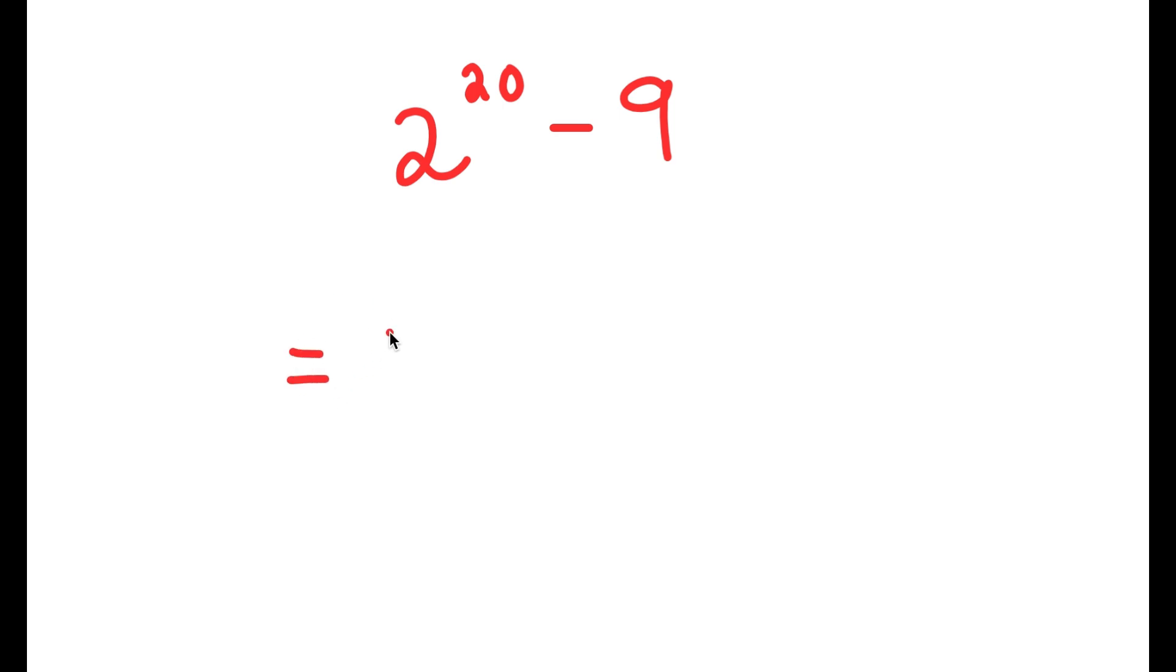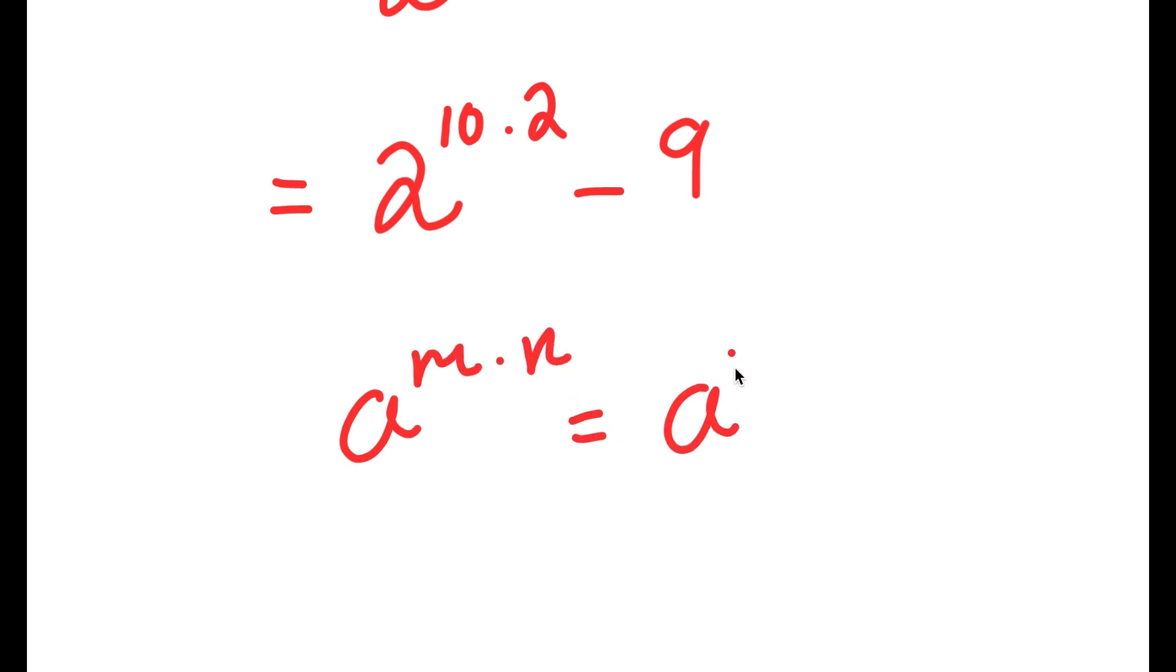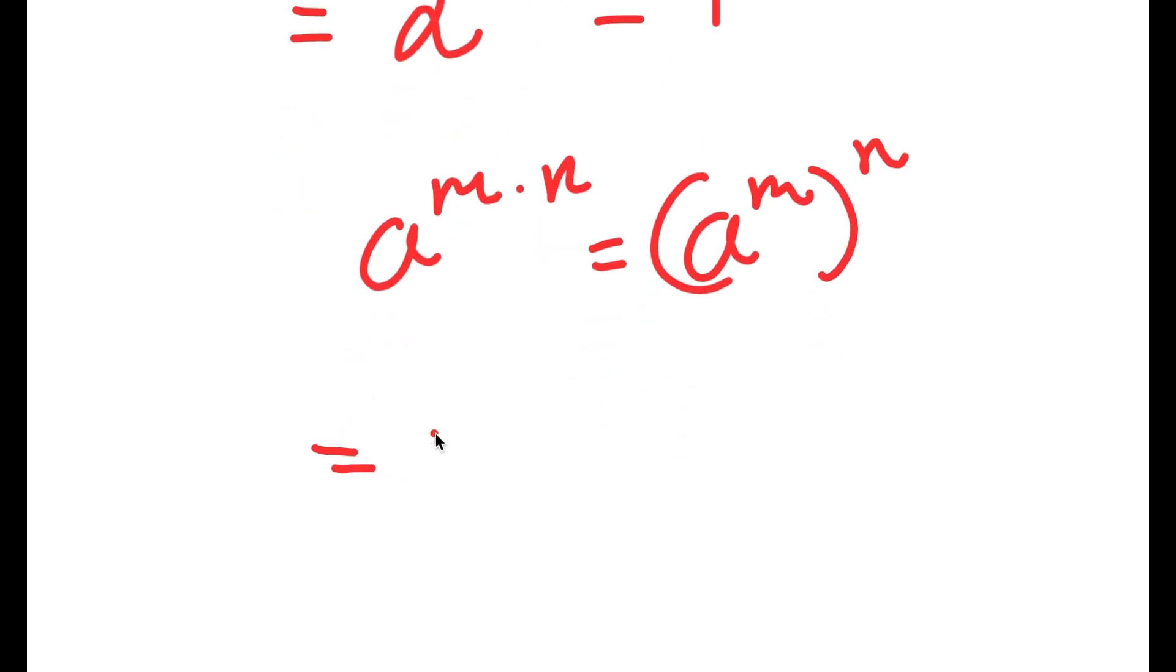So I'm going to first start by rewriting 2 to the power of 20 as 2 to the power of 10 times 2. And if I have something in the form a to the power of m times n, this is equal to a to the power of m to the power of n. So 2 to the power of 10 times 2, that's going to equal 2 to the power of 10 to the power of 2.